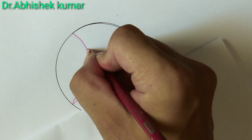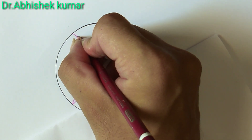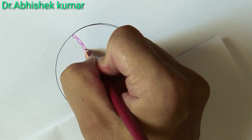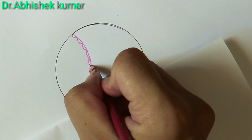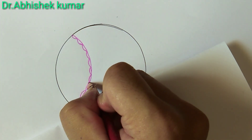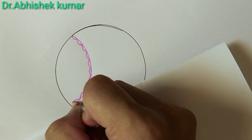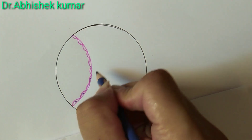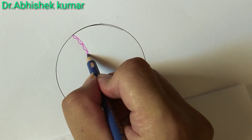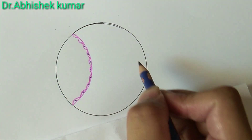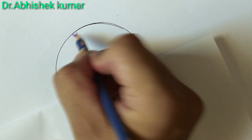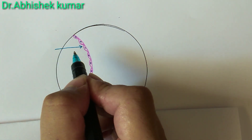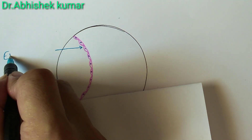We are making the simple squamous epithelium, that is endothelium. We can say endothelium. This simple squamous epithelium lies on the basement membrane, and here the nuclei we are drawing in it. We will label this one — this one is endothelium.